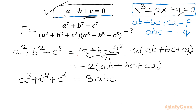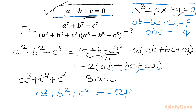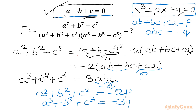Let us rewrite our results. A squared plus B squared plus C squared will be minus 2 times P, so it equals minus 2P. And A cubed plus B cubed plus C cubed will be minus 3Q. These two results we will use a little later.